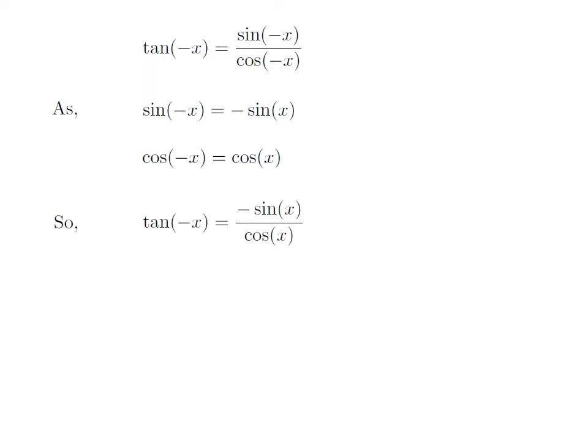Let us apply the above identities in the expression of tangent of minus x. So tangent of minus x is equal to minus sin of x divided by cosine of x. As sin of x divided by cosine of x is equal to tangent of x.